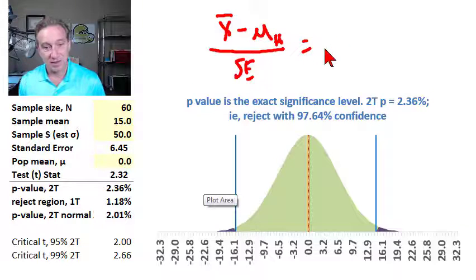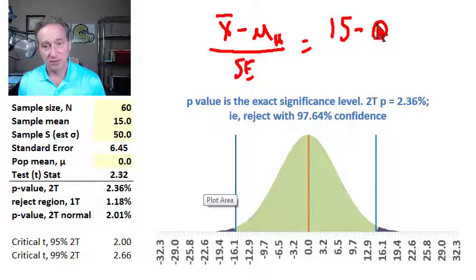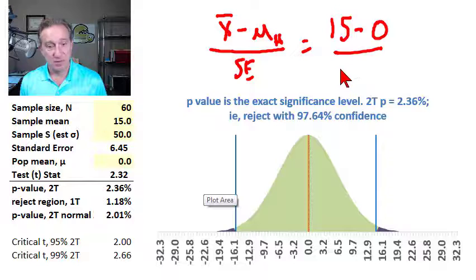So in this case, our sample mean is 15. Our null hypothesized true population mean is zero. That's a difference of 15, but we want to divide by the standard error